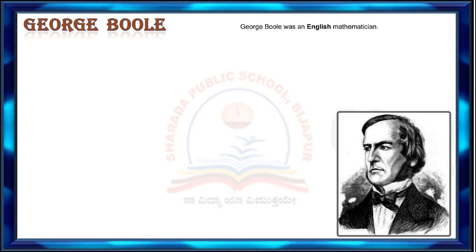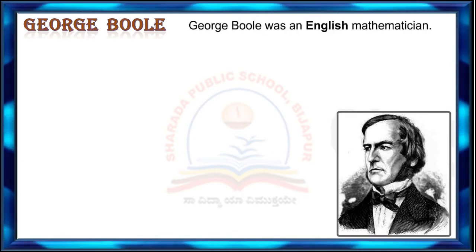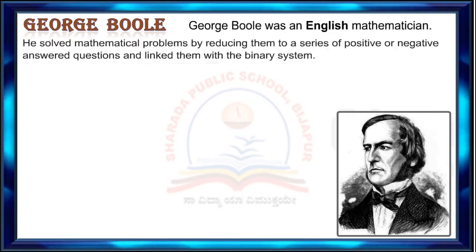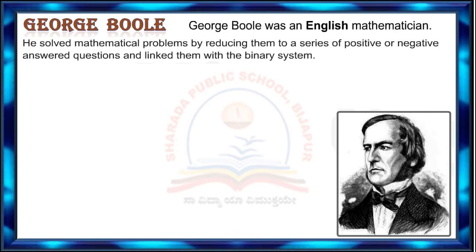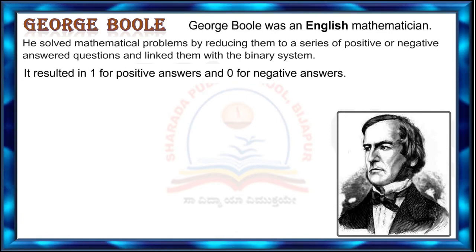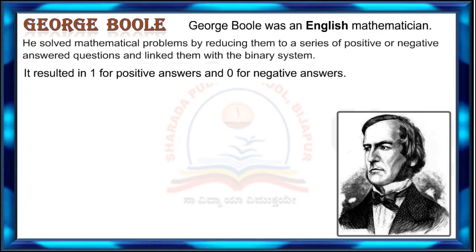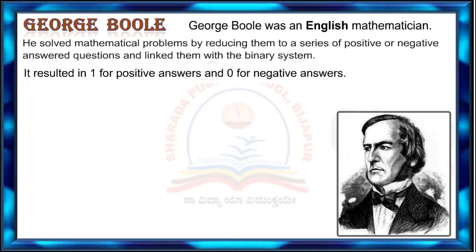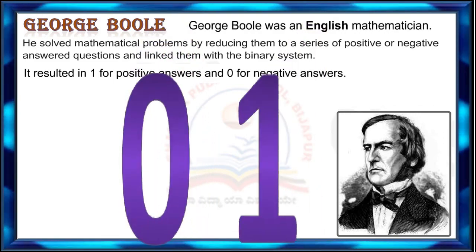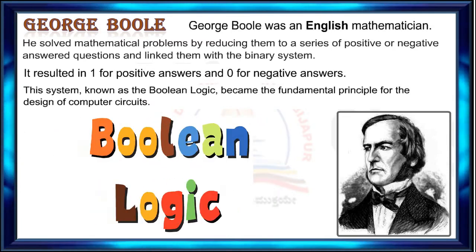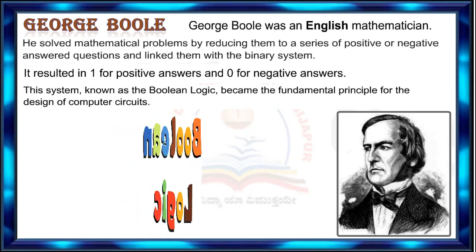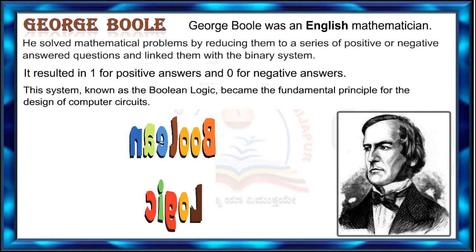George Boole was an English mathematician. He solved mathematical problems by reducing them to a series of positive or negative answered questions and linked them with the binary system. It resulted in 1 for positive answers and 0 for negative answers. This system, known as Boolean logic, became the fundamental principle for the design of computer circuits.